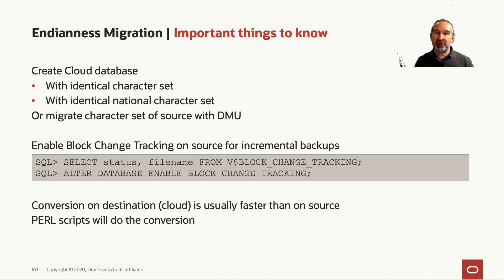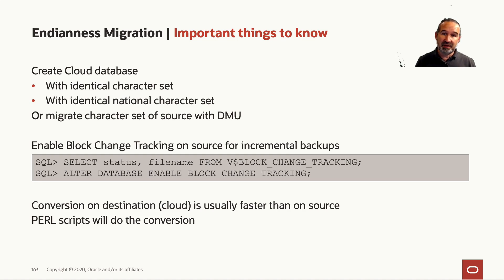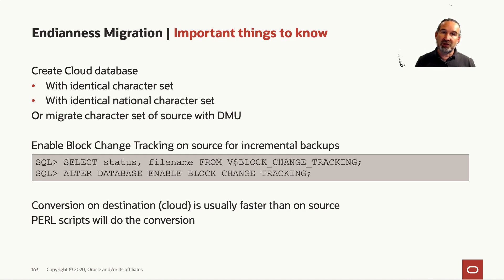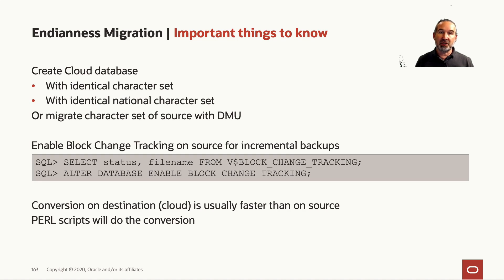The DMU — the Data Migration Assistant for Unicode — is in your Oracle home; you just have to change the executable bit when you start it, and it has a separate directory in your Oracle home. If you deal with incremental backups, it's very advisable to check V$BLOCK_CHANGE_TRACKING. If there's no block change tracking file, enable it — it's an Enterprise Edition feature. Enable block change tracking on the source, and this will speed up incremental backups significantly.